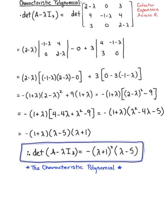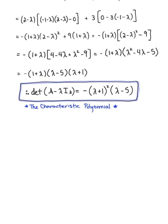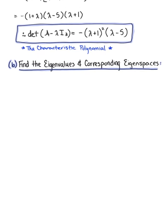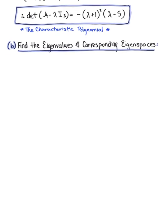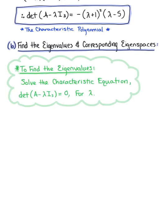We are now ready to move on to part B, where we are asked to find the eigenvalues of matrix A and their corresponding eigenspaces. To find the eigenvalues, we need to solve the characteristic equation — the determinant of A minus lambda times the identity equals 0. Taking the characteristic polynomial -(lambda+1)^2 (lambda-5) and setting this equal to 0.